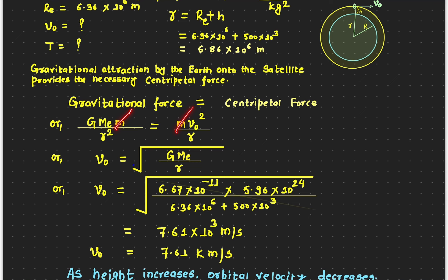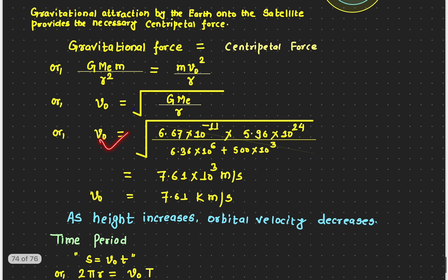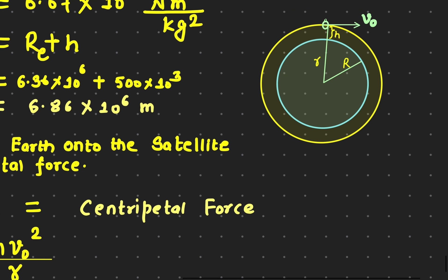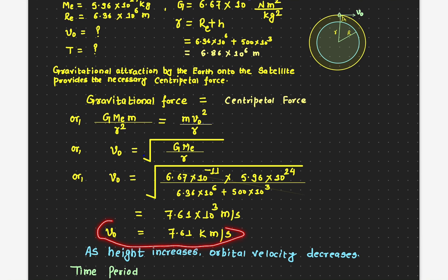The mass of the satellite cancels out from both sides. Solving for the orbital speed gives the equation v = √(G·Me / r). This does not depend on the mass of the satellite — whether you have a big satellite or a tiny particle, if it moves in a circular orbit at 500 km height, all will have exactly the same speed. Plugging in the values gives 7.61 kilometers per second.